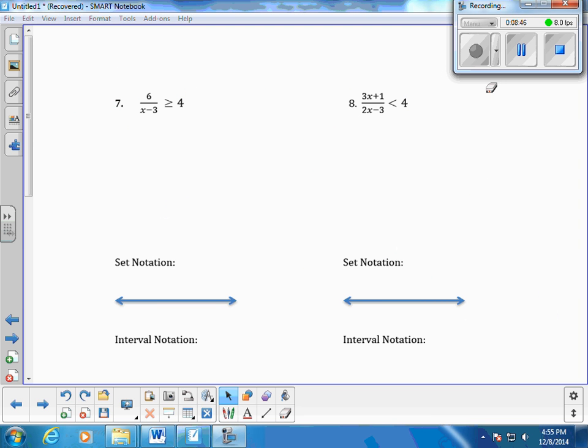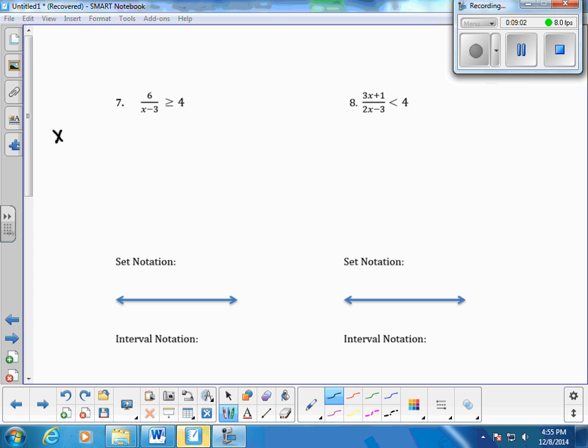Okay, rational inequalities. The quotient possibly changes sign only where the x values make the numerator or the denominator equal to 0. So, the first thing we're going to do to find critical values is the denominator is equal to 0 when x is equal to 3. So, that's going to be one of our critical points. That's when the denominator, you take the denominator, set it equal to 0.